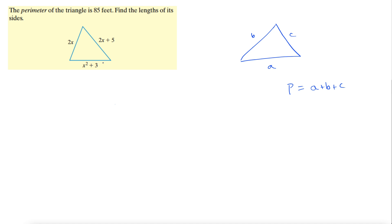Here we have our perimeter is 85 feet. So 85 equals, let's do A as x squared plus 3, calling this A, plus B. Let's do B up here just to be consistent with the other picture that I drew, plus C. So plus B was 2x, and C is 2x plus 5.